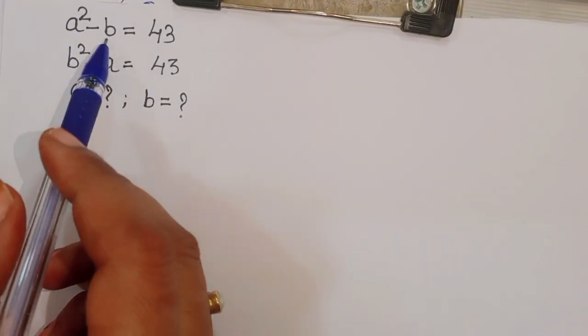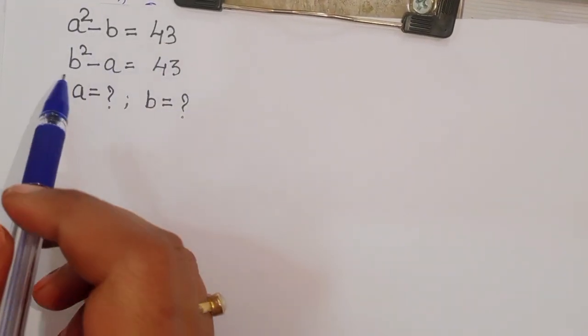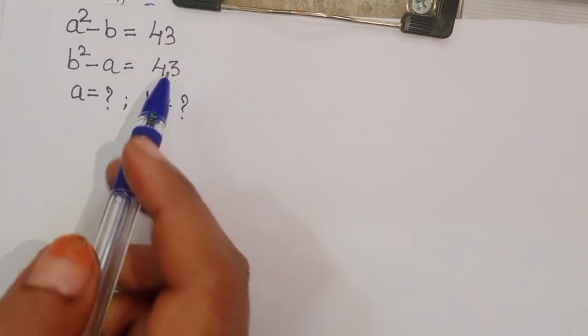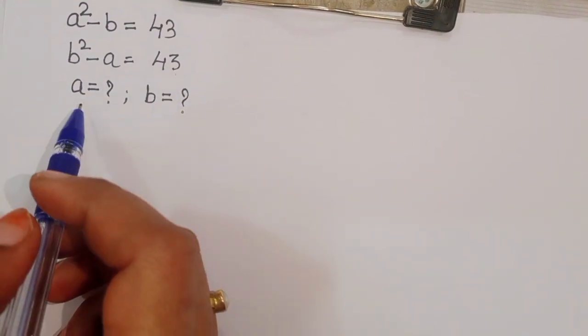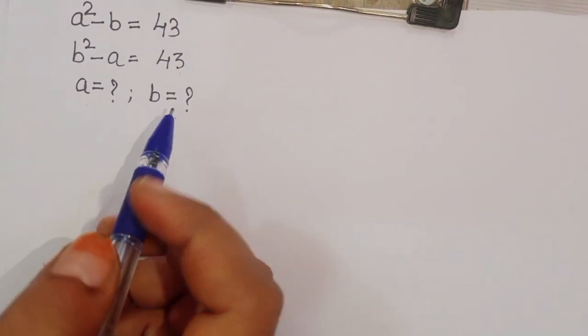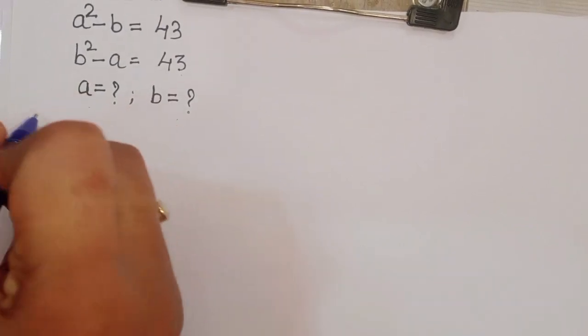The question is given: a squared minus b is equal to 43, and b squared minus a is equal to 43. We have to find out the value of a and b. Let's see the solution.